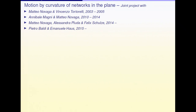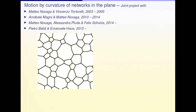So what is all this project about? Well, you have something like this — a network, network curves in the plane — and you want to let it evolve by mean curvature. Here there is only one curvature, so just by curvature. This means that at every point of this curve, at every time, it moves in normal direction by the curvature of the curve passing through there.